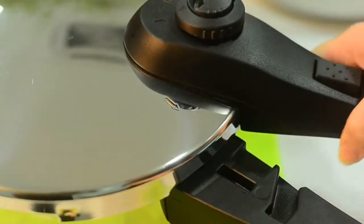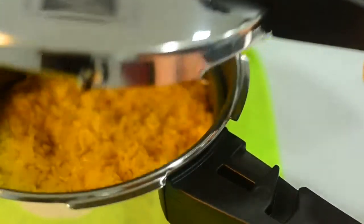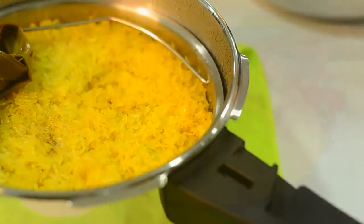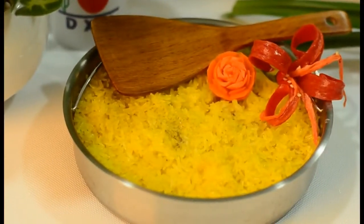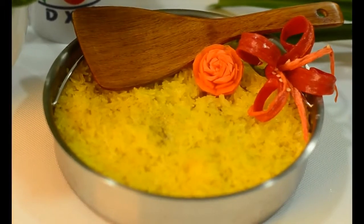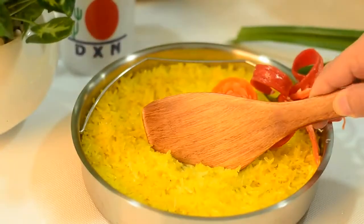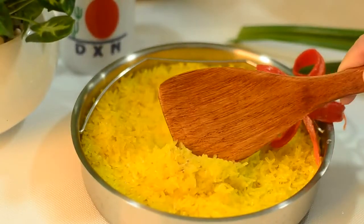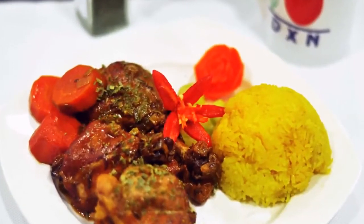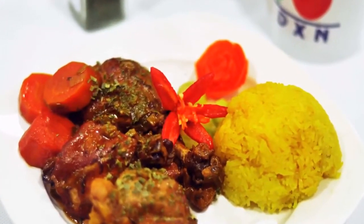As you can see, the cooking time has been greatly reduced. Under normal cooking methods, it would have taken more than 2 hours to cook this glutinous rice, but with the DXN pressure cooker, it only took about 30 minutes. This turmeric glutinous rice can be enjoyed with some braised chicken or chicken curry.